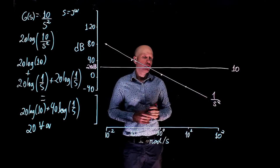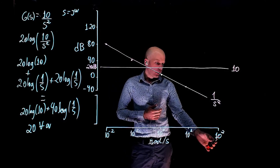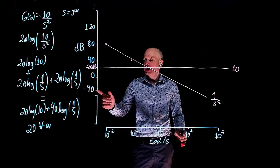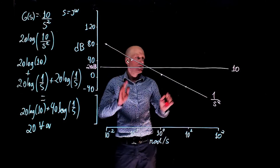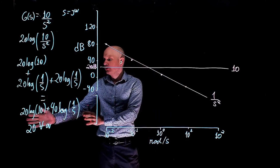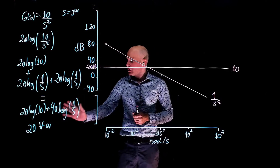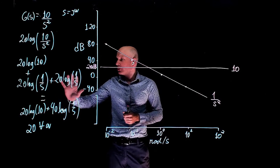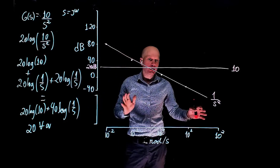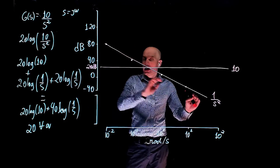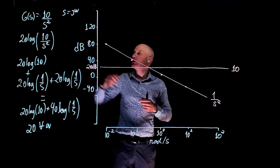Here we have the curve for 1 over s squared and the curve for 10. At 10 to the power of 1 we are at negative 40 dB, and at 10 to the power of 2 this curve should be at negative 80 decibels. These are the two building blocks. Because of the log property that allowed us to split 20 log of 10 over s squared into two components, we can now simply add them up, and that addition is the Bode plot of g of s.